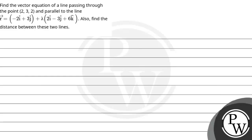Hello guys. The question is: find the vector equation of a line passing through the point (2, 3, 2) and parallel to the given line, and also find the distance between the two lines.